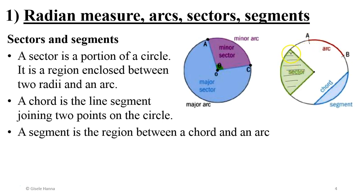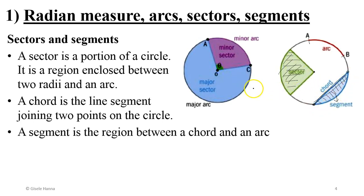A chord is a segment connecting two points on the circumference of the circle. A segment is the portion of the disc that lies between a chord and the arc. So these are the definitions: arcs (minor and major), sectors, chords, and segments.